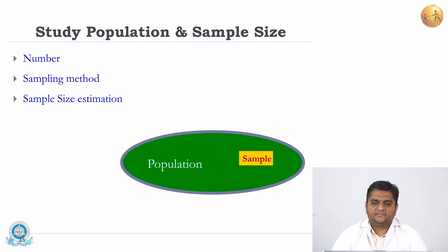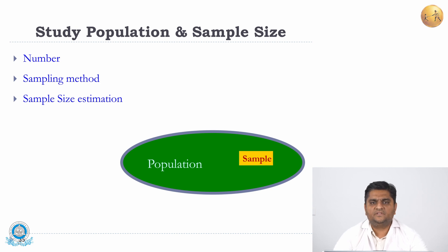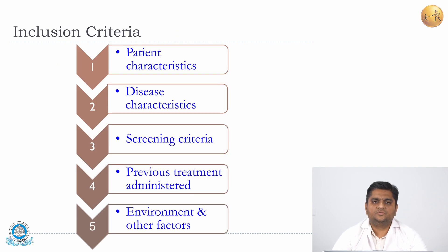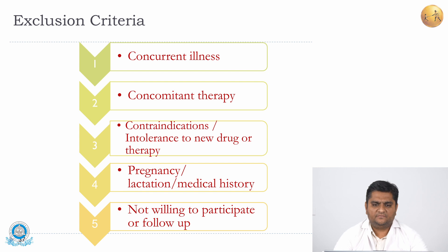Regarding sample size: we cannot study the entire population due to budgetary, time, or resource constraints, so we study a representative sample of the population. You must state the number of people included in the study, the sampling method adopted, and how the sample size was estimated — with the formula mentioned in the protocol. For inclusion criteria, mention what characteristics will be considered in the study. For exclusion criteria, specify concurrent illness, concomitant therapy, contraindications, pregnancy, lactation, relevant medical history, or those not willing to participate or follow up — these must be mentioned clearly in the study protocol.